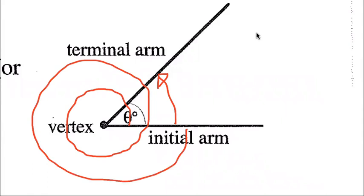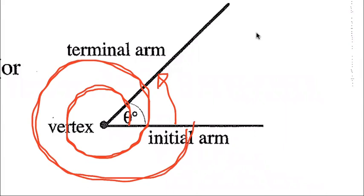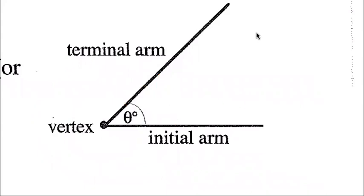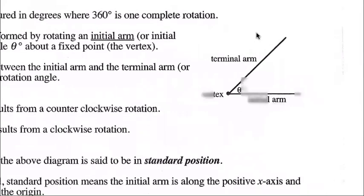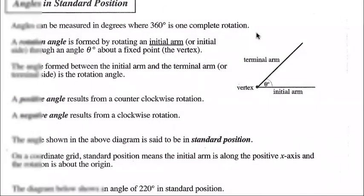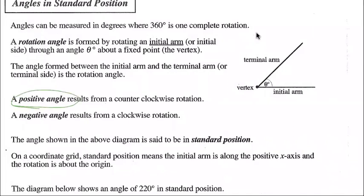It could also go backwards. Rotation angles that go counterclockwise are positive rotation angles. Angles that go clockwise are negative rotation angles. So those are two different types of rotation angles.